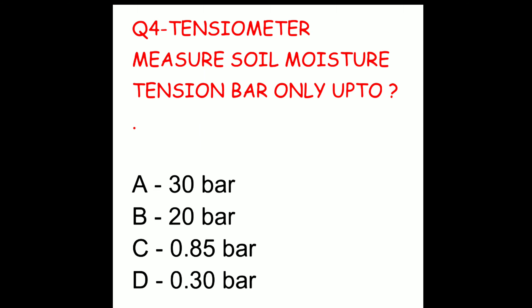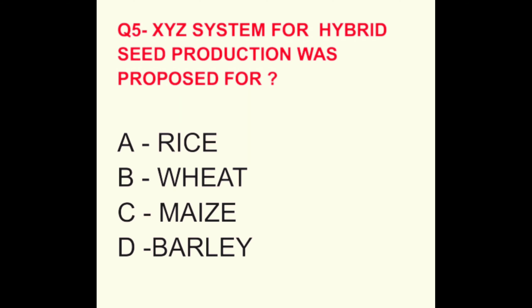Question 5. XYZ system for hybrid seed production was proposed for? The options are rice, wheat, maize, or barley. The correct answer is wheat.